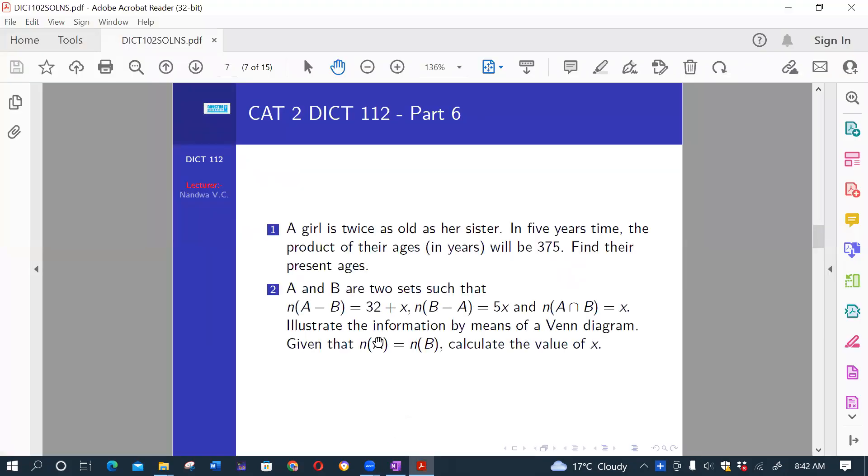Next, A and B are two sets such that the cardinality of A minus B is 32 plus x, cardinality of B minus A is 5x, and cardinality of A intersect B is x. Illustrate this information on a Venn diagram, and given that cardinality of A equals cardinality of B, calculate the value of x.